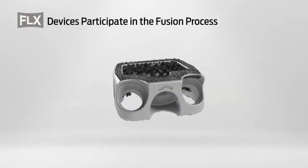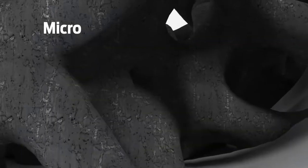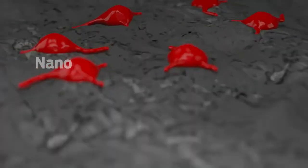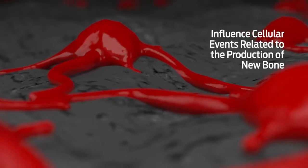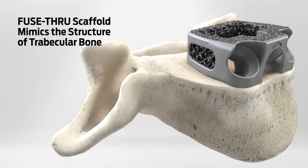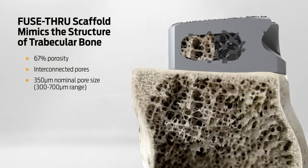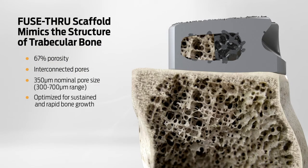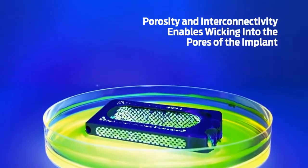Flex devices participate in the fusion process with a combination of macro, micro, and nanostructural characteristics that influence cellular events related to the production of new bone. The porous fuse-through scaffold mimics trabecular bone with interconnected pores in a size range that's optimal for rapid and sustained bone growth and enables wicking into the pores of the implant.